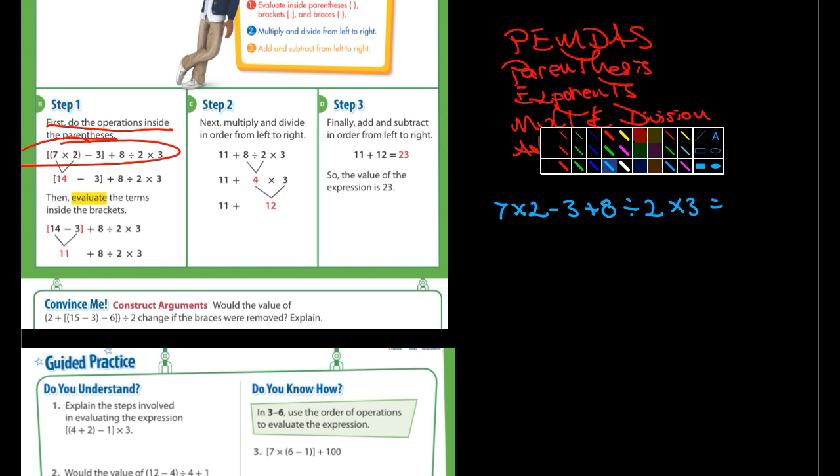If I did 7 × 2, that's 14. Then I subtracted 3 from that, that's going to be 11. Now what do I have? Plus 8. What's 11 + 8? That's 19. 19 ÷ 2, that's going to be 9.5. And then 9.5 × 3. 9 × 3 is 27, and 0.5 × 3 is 1.5. So 27 + 1.5, we have 28.5.